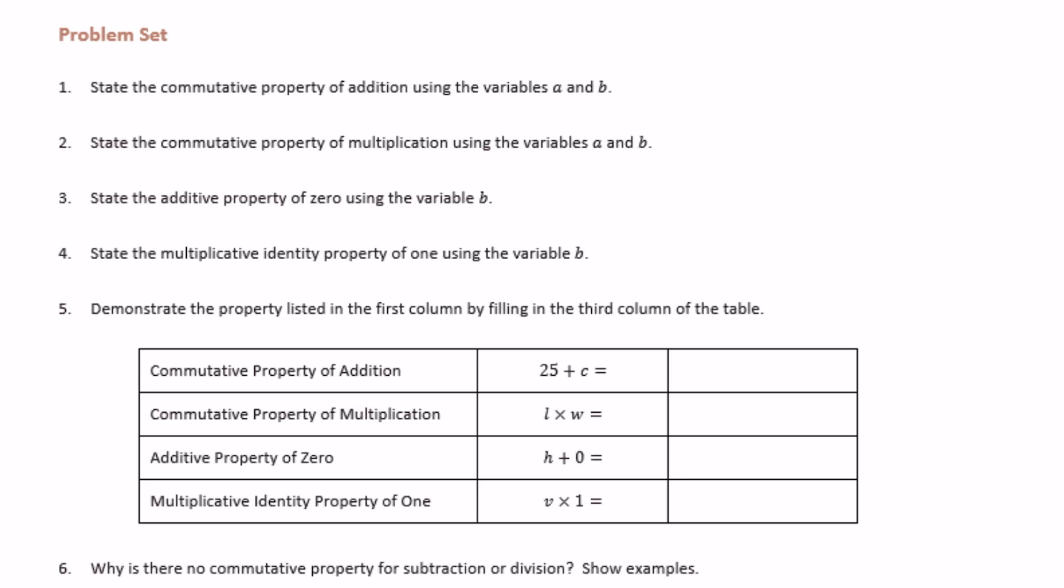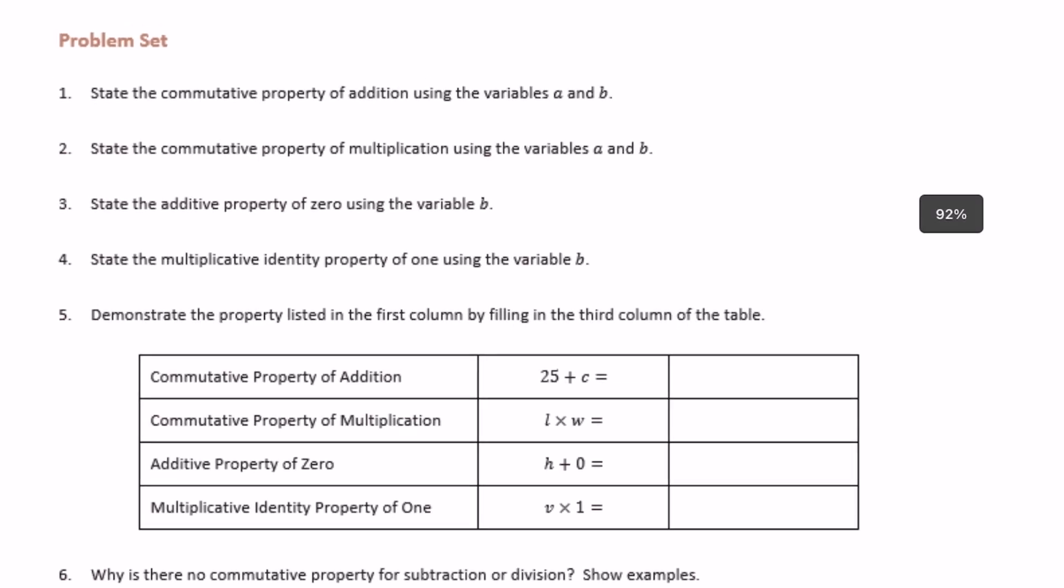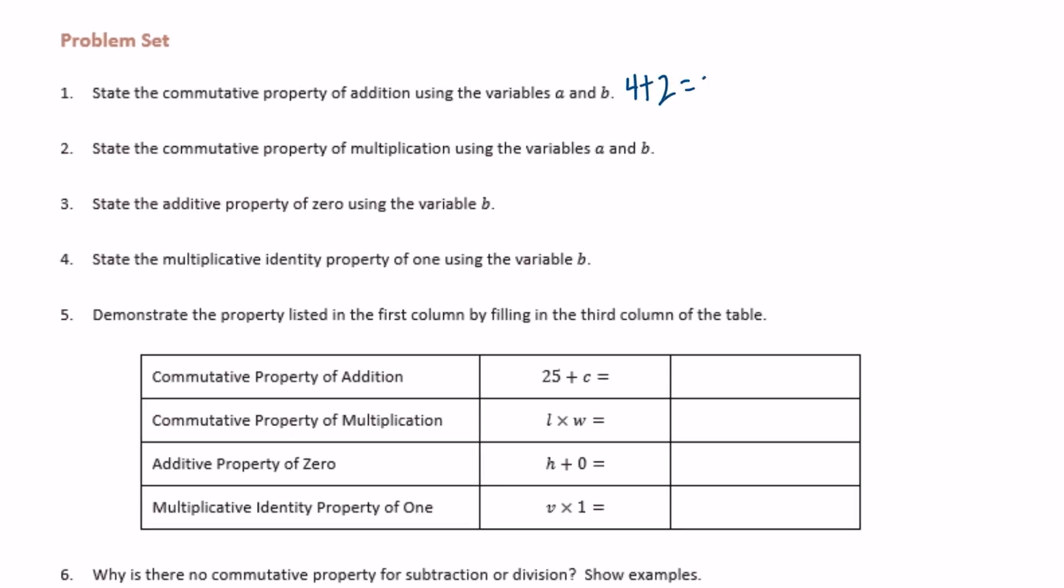Sixth grade module four lesson eight problem set number one: State the commutative property of addition using the variables a and b. Remember the commutative property of addition is something like saying four plus two equals two plus four. It doesn't matter what order they're in, it can be flipped. Let's say that a is four and b is two, so we could say a plus b equals b plus a.